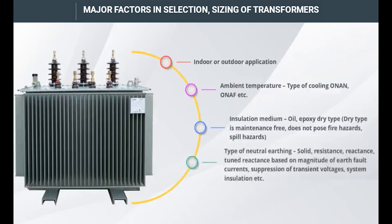The type of neutral earthing must be specified: solid, resistance, or reactance. A tuned resistance can be selected based on the magnitude of earth fault currents, with the aim of suppression of transient voltages and proper system insulation.